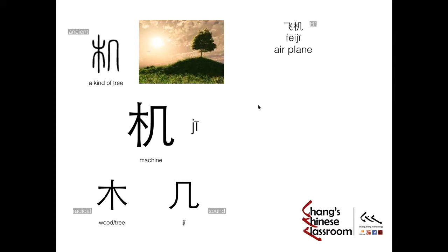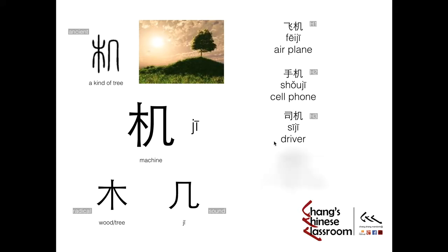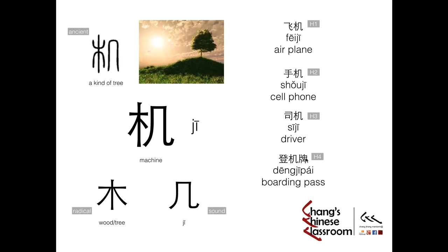Vocabulary: first, very simple — the airplane, the flying machine. Next: the hand machine — Shou Ji, the machine in your hand, that would be your cell phone. And this one is interesting: Si Ji, a career — the driver. Si actually means to operate, and Ji means the machine, so this is the guy who operates the machine — that's the driver. And last, a little complicated, in HSK level 4: Deng Ji Pai. Deng means get on board, and Ji is short for Fei Ji, so get on board to the airplane, and Pai means the card. So this is the boarding pass.